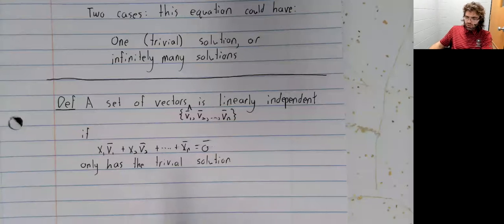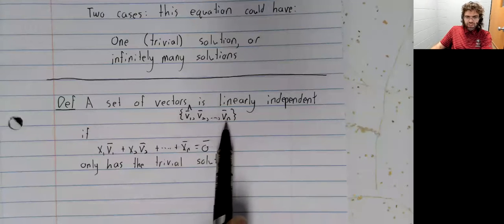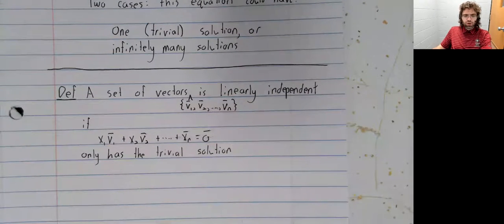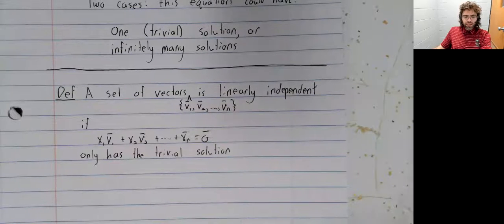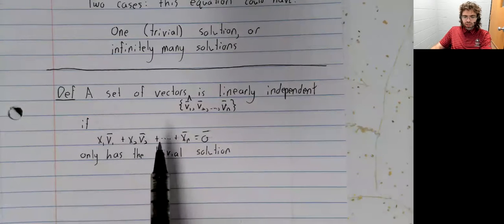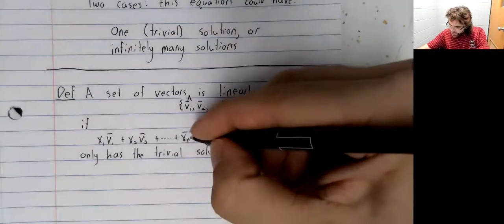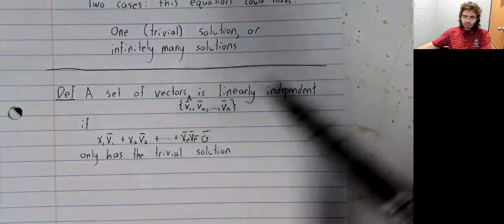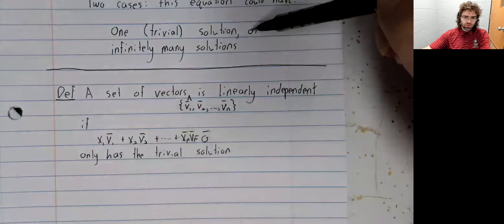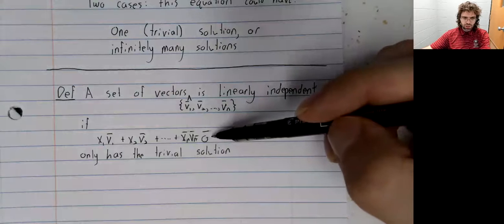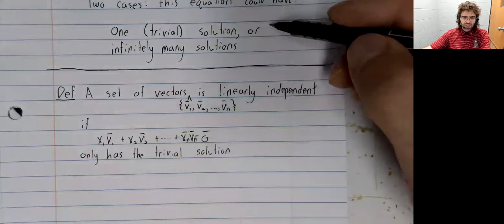Definition: A set of vectors v1 up to vn is linearly independent if the homogeneous vector equation x1v1 plus x2v2 plus up to xnvn equals zero has only the trivial solution. So they're linearly independent if this homogeneous equation is in this first case.